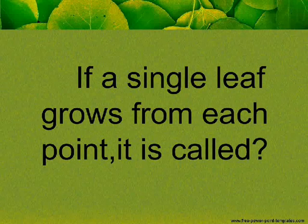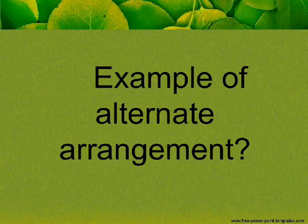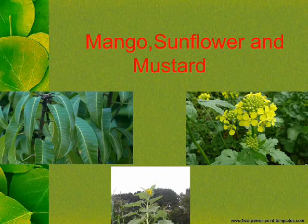If a single leaf grows from each point, it is called Alternate Arrangement. Examples of Alternate Arrangement include mango, sunflower, and mustard.